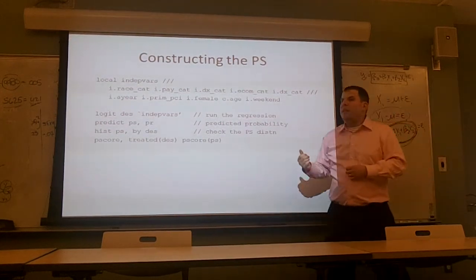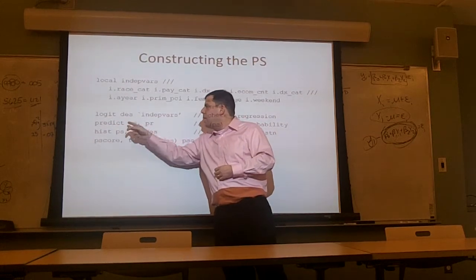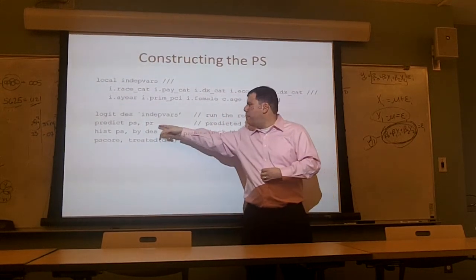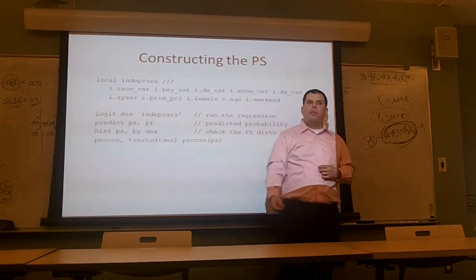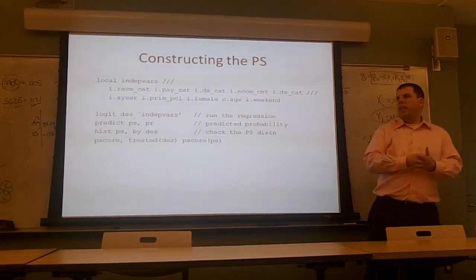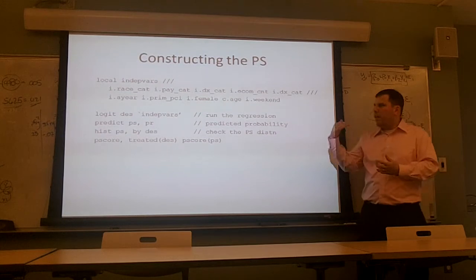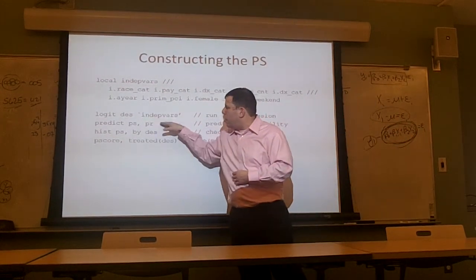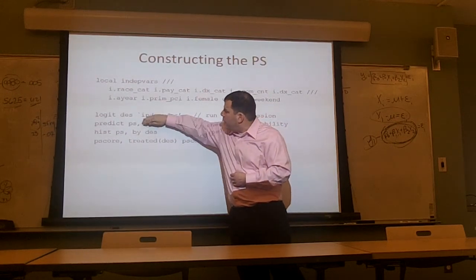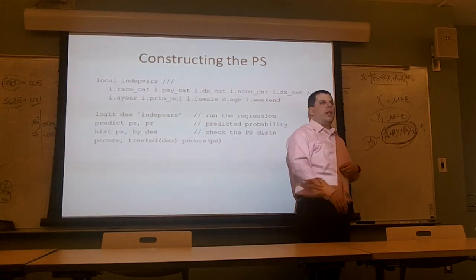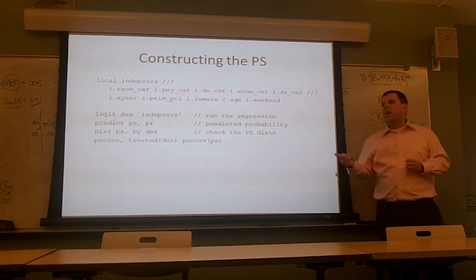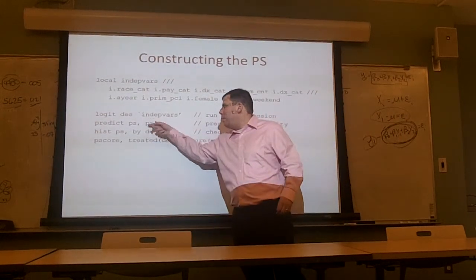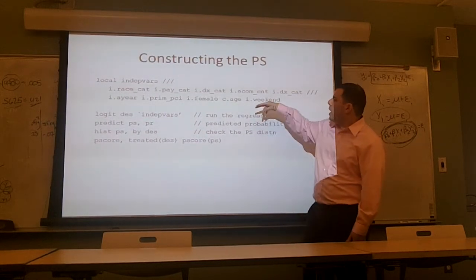To get the predicted probability, all we have to do is ask Stata: 'predict ps, pr' — the comma pr tells Stata that after logistic regression we want the predicted probability. There are other things we can ask for. In fact, if I left out the comma pr it would give me the predicted probability anyway because that's the default behavior, but I'd rather be specific about it.